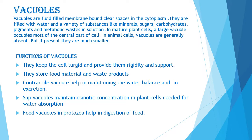Cell sap is rich in minerals, sugar, carbohydrates, pigments, and metabolic waste in solution. In animal cells, vacuoles are generally absent, or if they are present, they are present in a very small size — not like in plant cells.